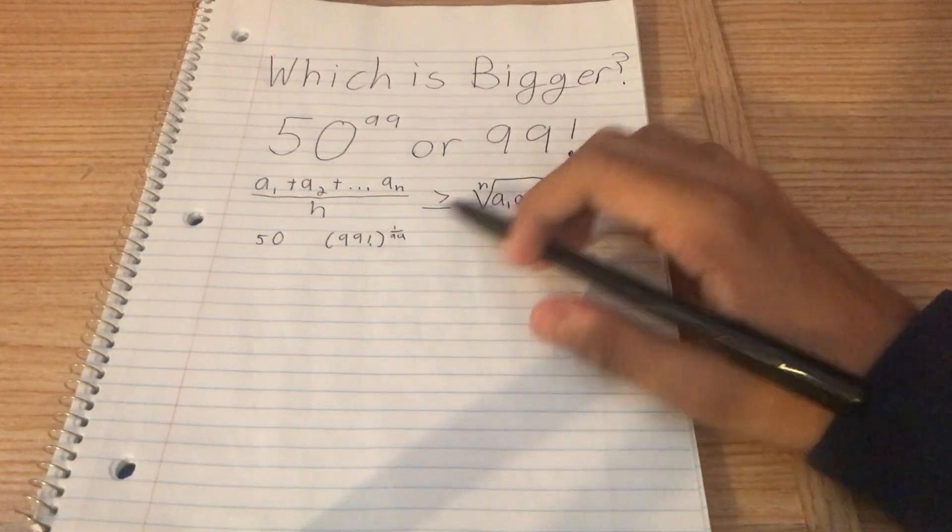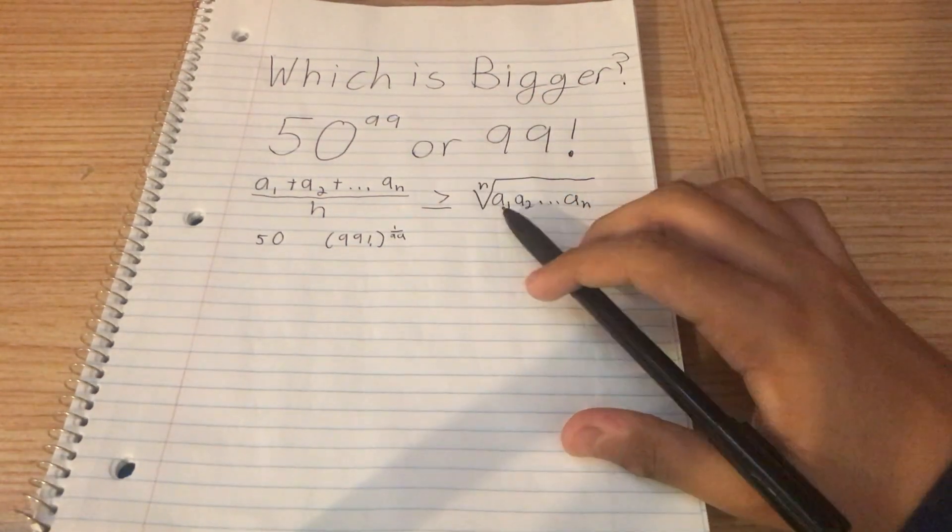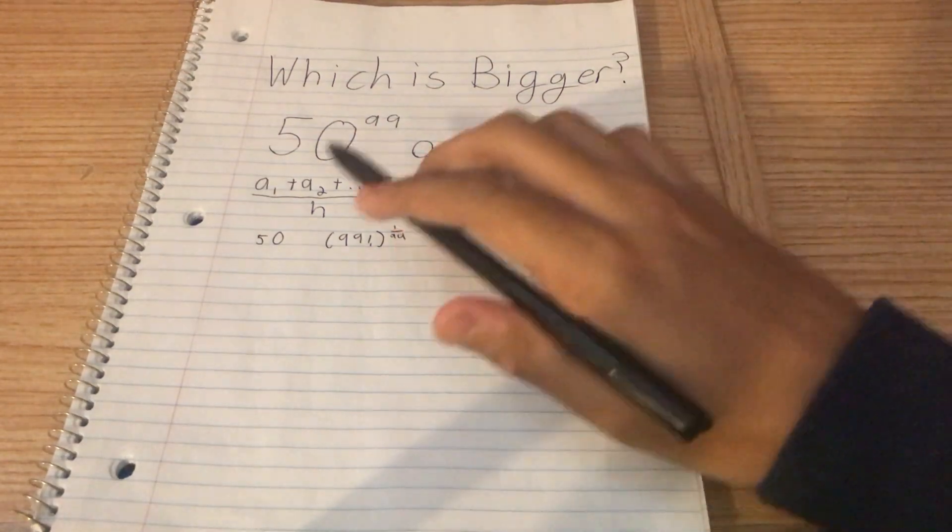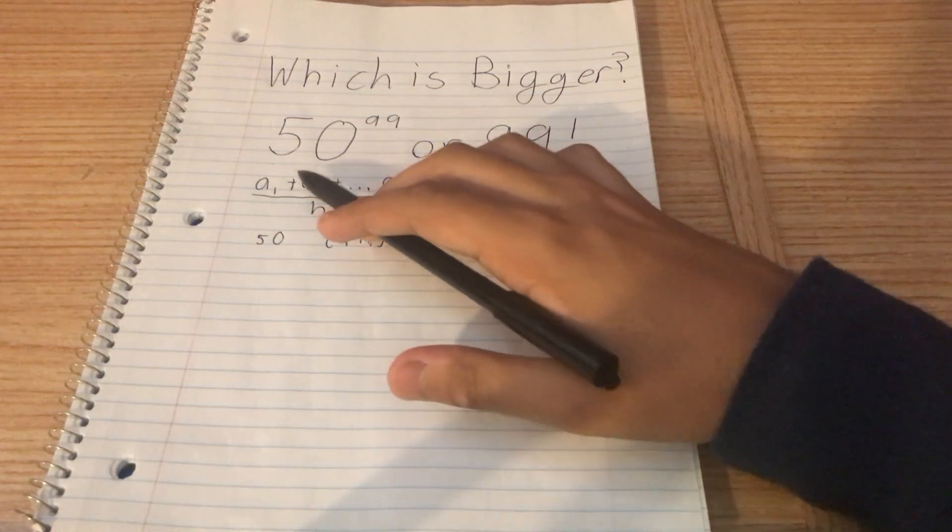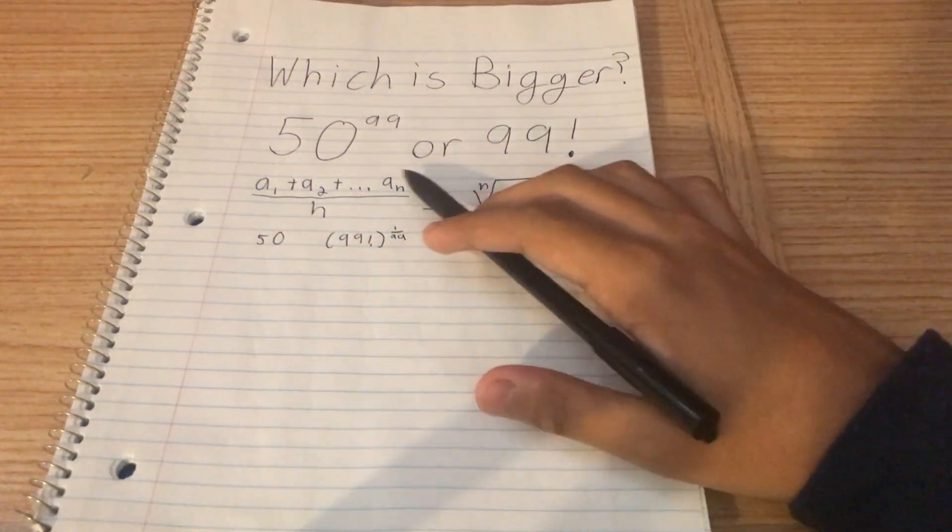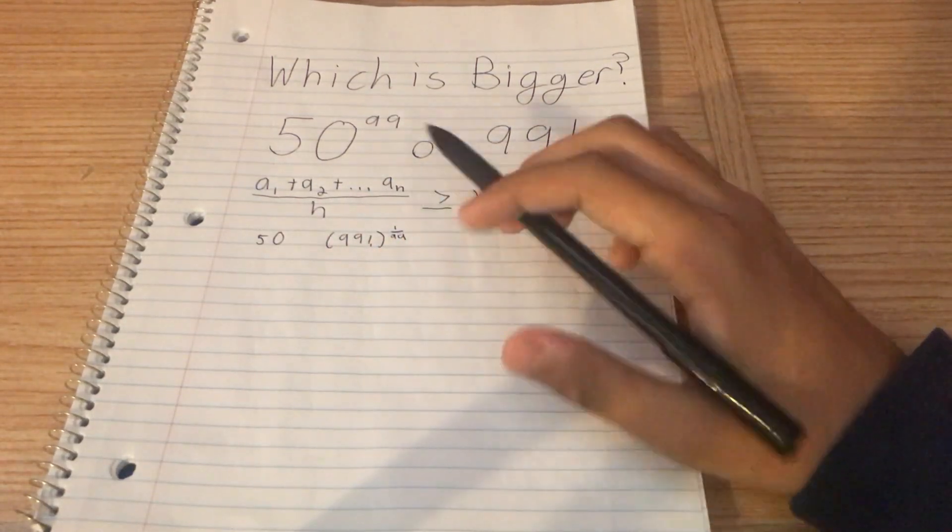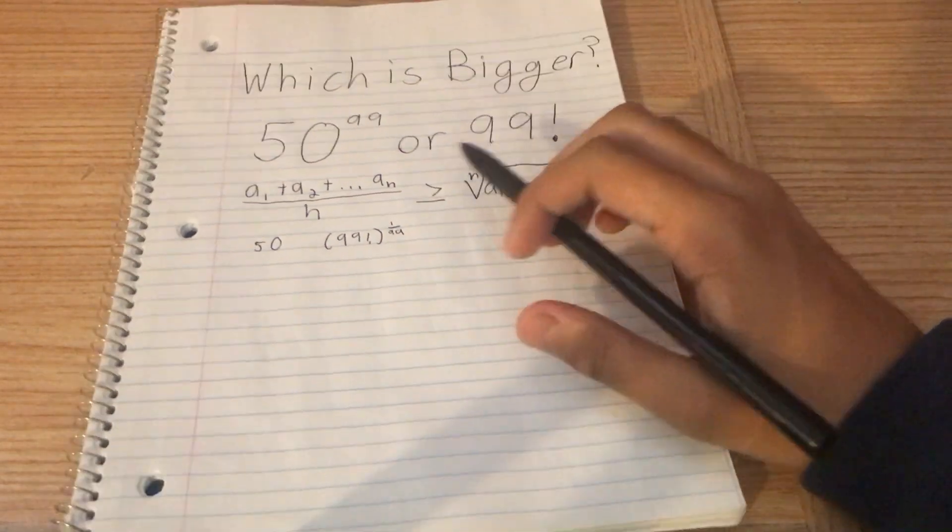That product looks very similar to this product right here. So maybe we can say that the terms 1, 2, 3, 4, all the way to 99 can be used as a sequence, and we can use the AM-GM inequality to further that sequence. So let's try that.